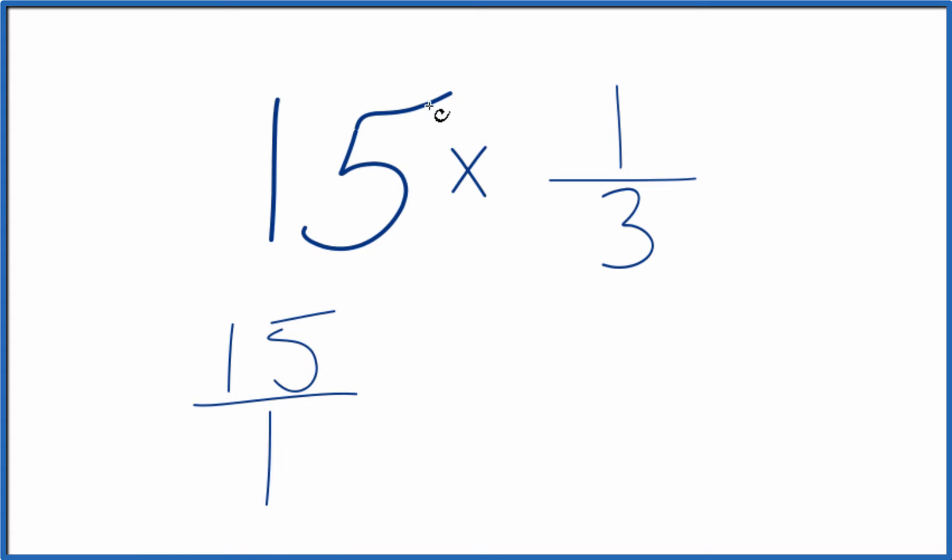Now we have a fraction though. We can multiply that fraction times one-third. When we multiply fractions, we multiply the numerators, then the denominators.